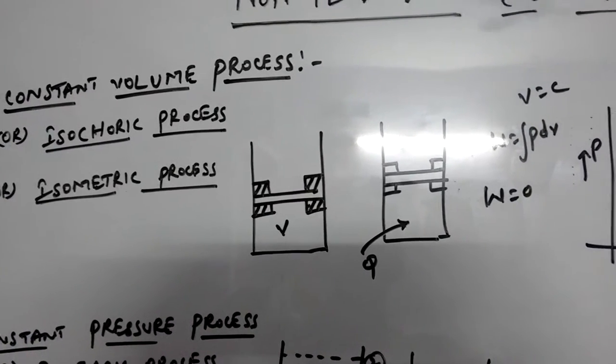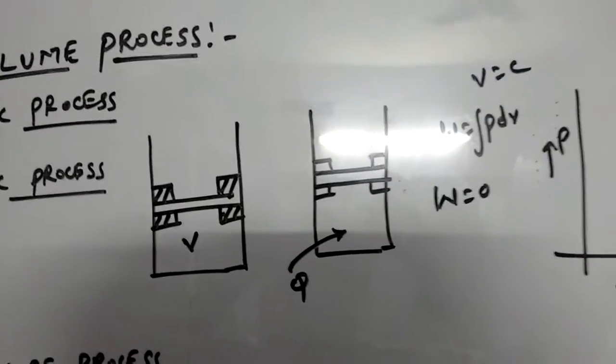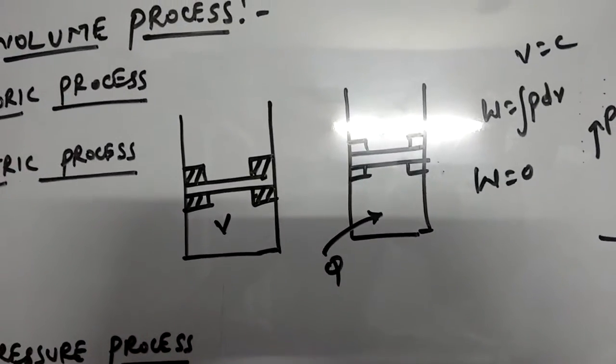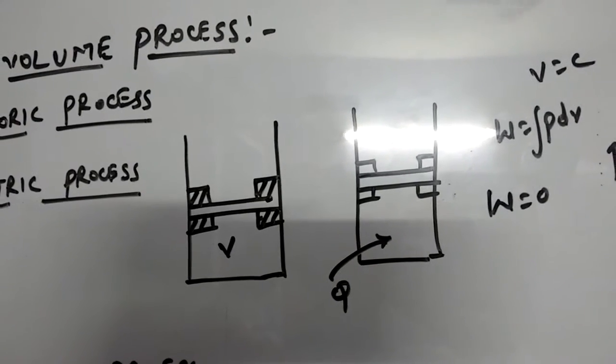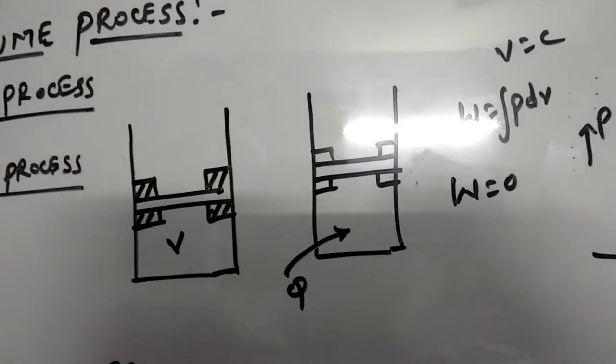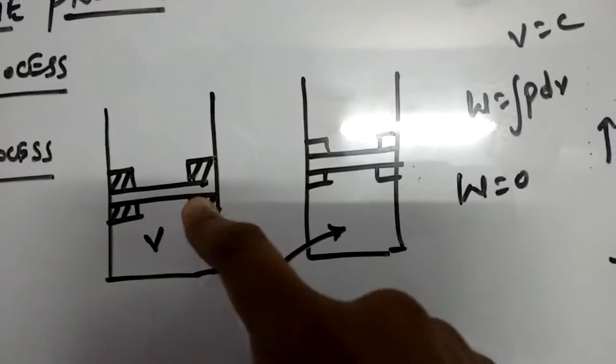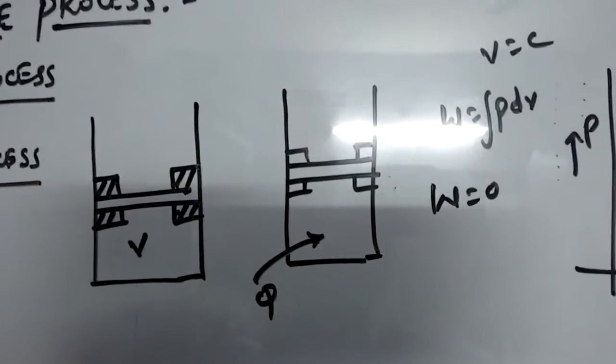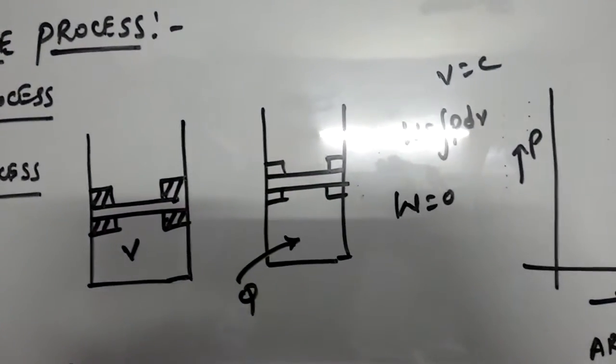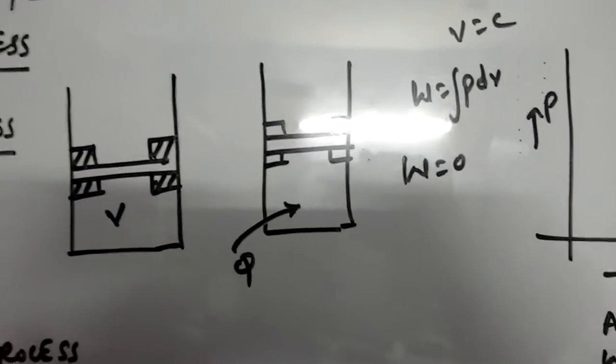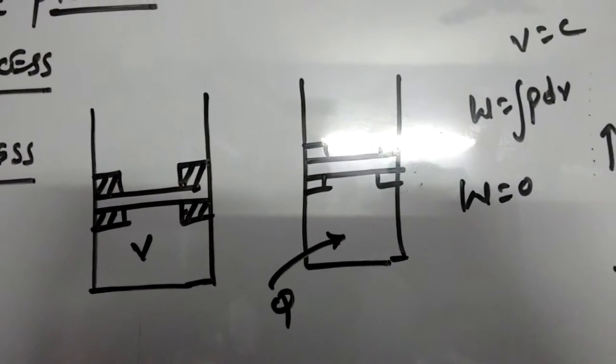Consider a piston and cylinder arrangement with volume of gas V and supply some heat energy Q. Let this piston be fixed with the help of stoppers, means we are fixing the volume. Volume is not changing here. Heat energy, because of the intermolecular momentum transfer...